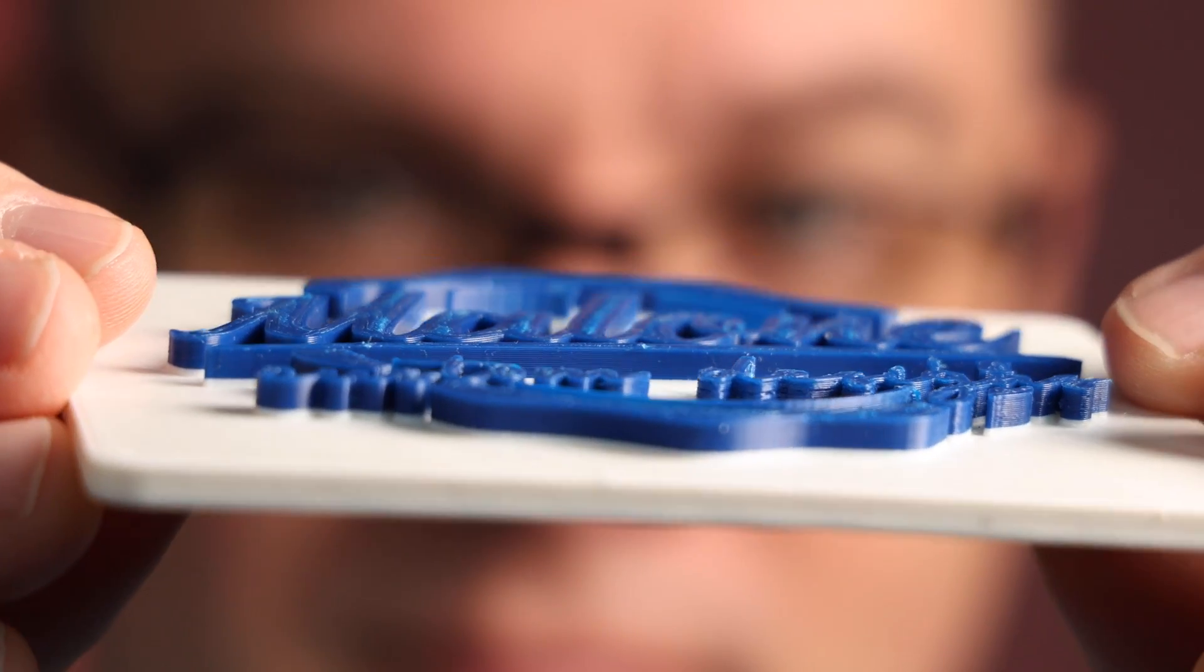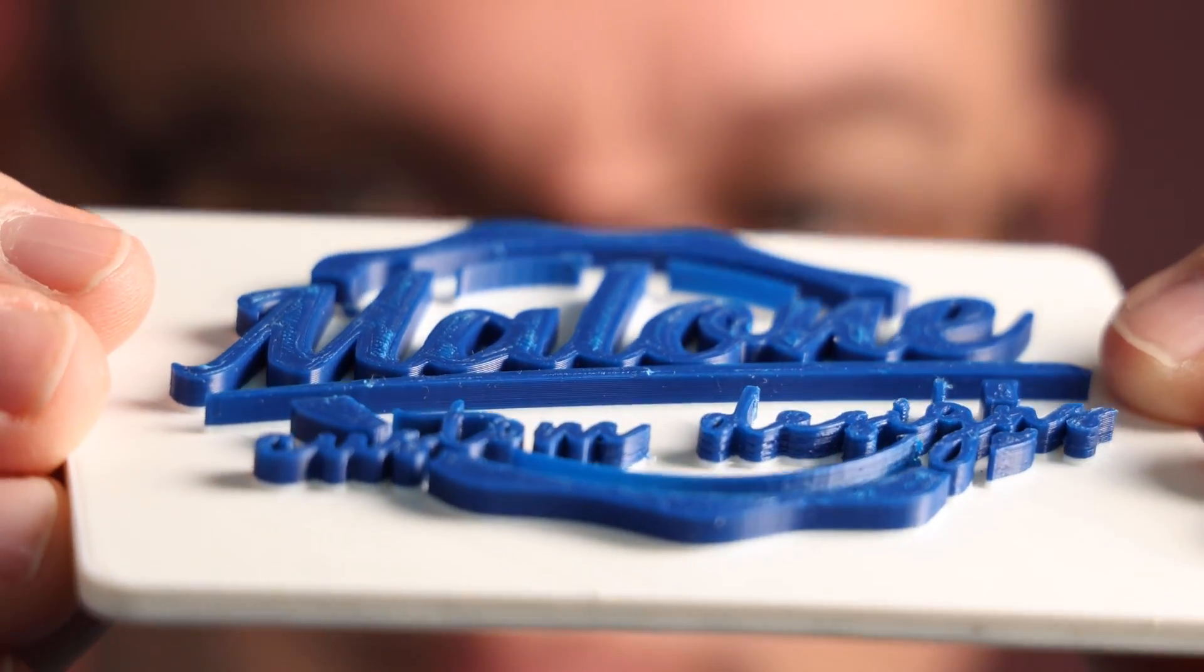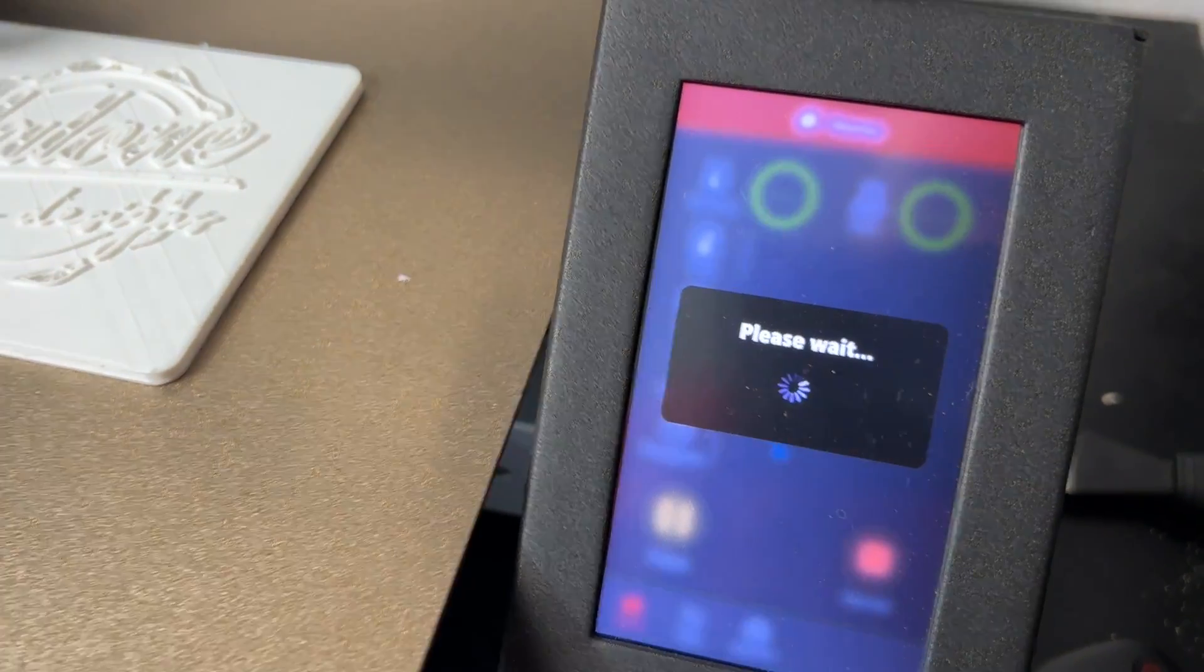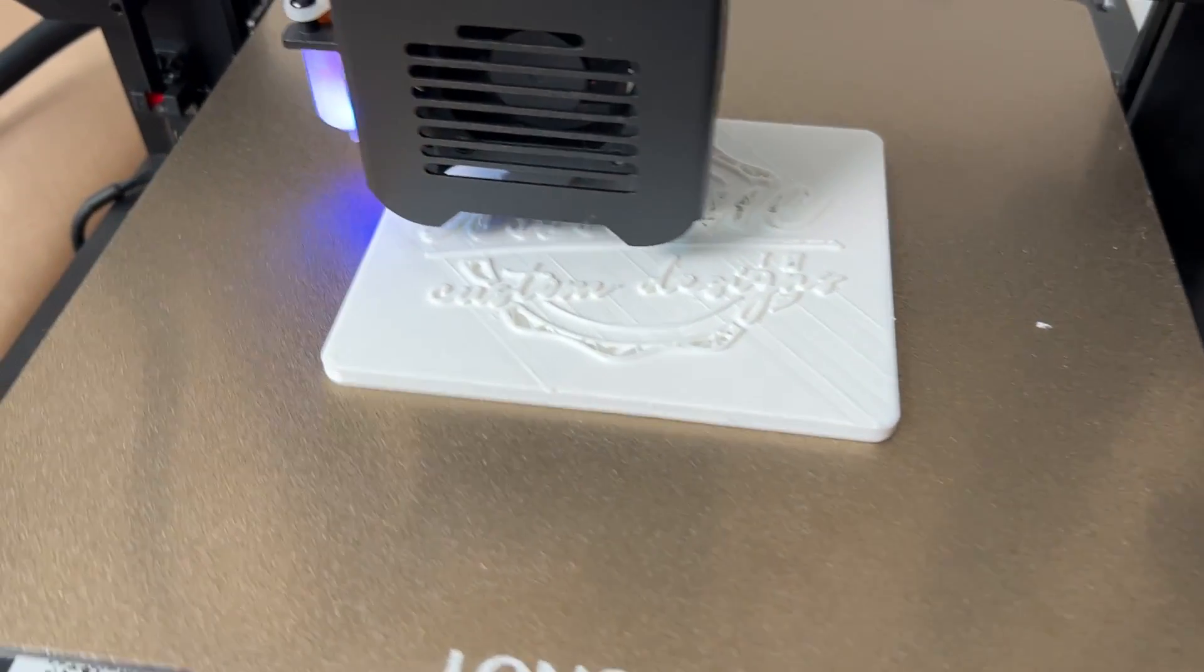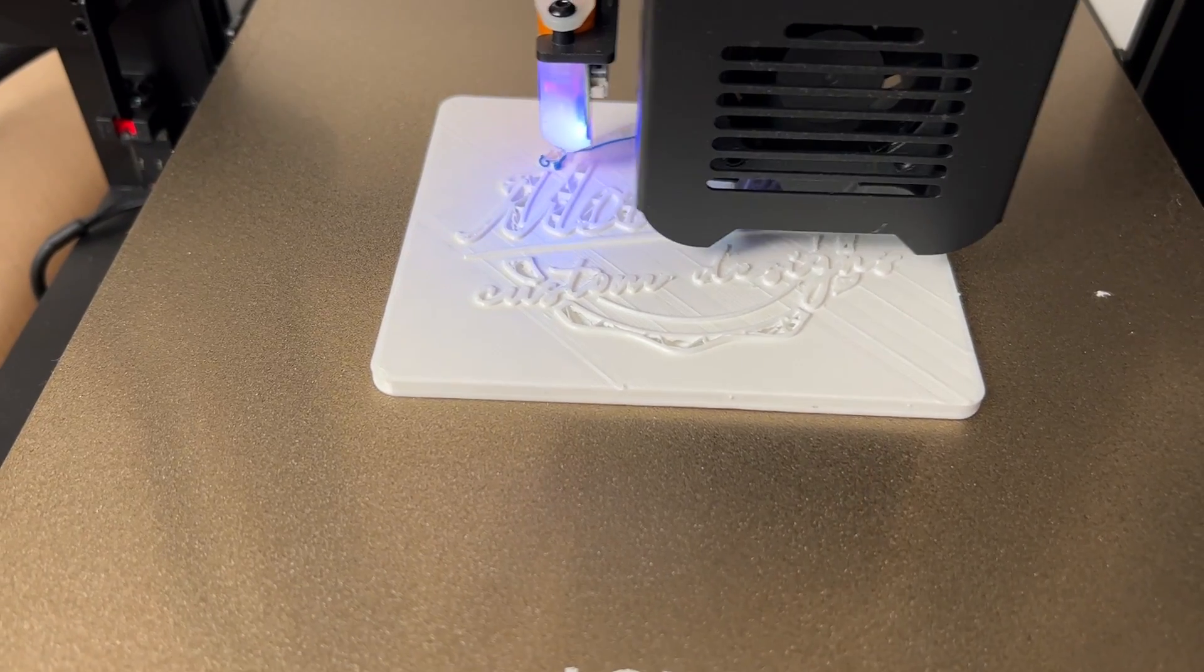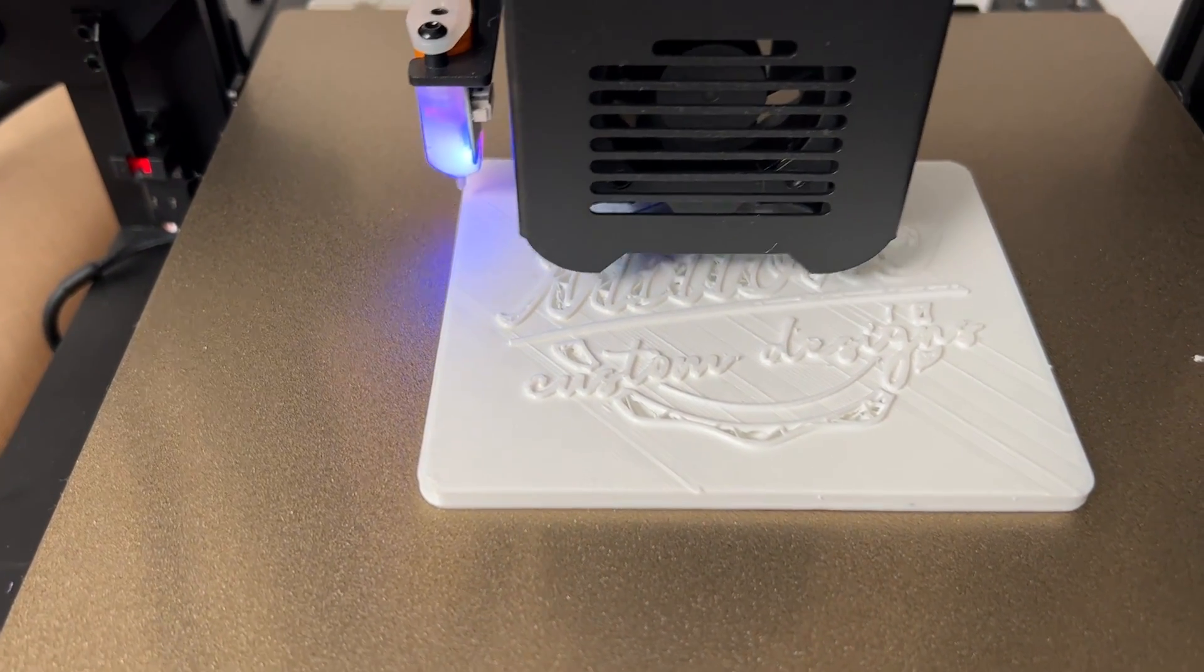I designed this in Fusion 360. And then whenever I sliced it and sent it to my printer, I stopped it halfway through the print and changed from the white filament to this blue filament. Now I'm really excited about this. I want to try some more multicolored stuff in the future. Let me know in the comments something that you would like to see printed or what you would like to know about next.